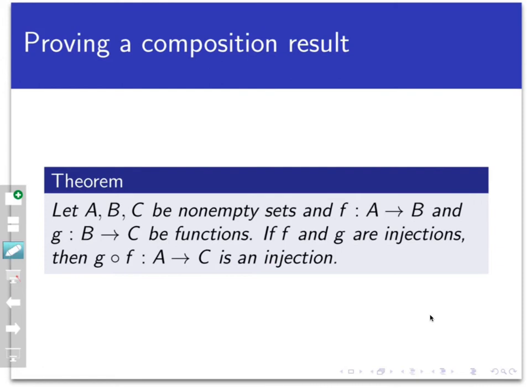So let's look at the proof. So just before we begin writing things, let's review what it would mean to prove that g circle f from A to C is an injection. Don't let the composition notation fool you. All we're doing here is looking at a function from A to C and want to prove that it's an injection.